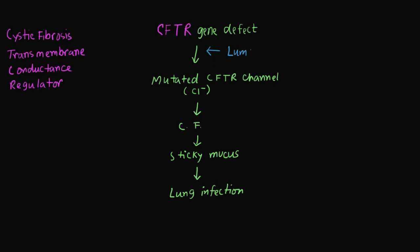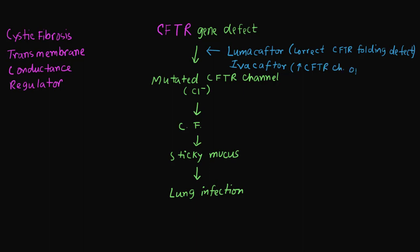In cystic fibrosis, the drugs we use can act at different levels. The first group is lumacaftor and ivacaftor, also known as CFTR potentiators. Lumacaftor acts by correcting the CFTR folding defect, and ivacaftor works by increasing the CFTR channel opening, thereby increasing chloride transport. These two drugs are available as a combination, approved for the most common cystic fibrosis mutation, which is delta F508.